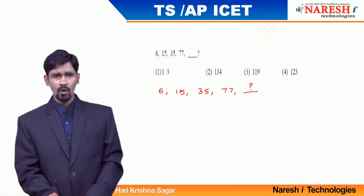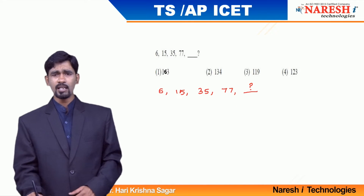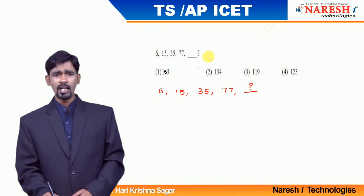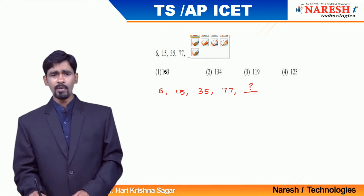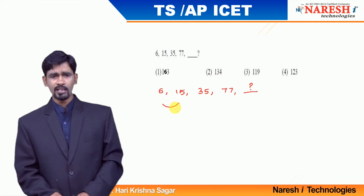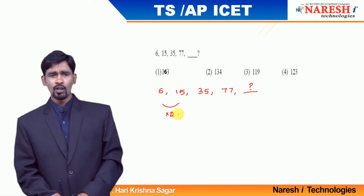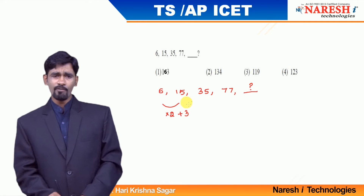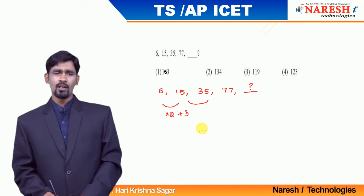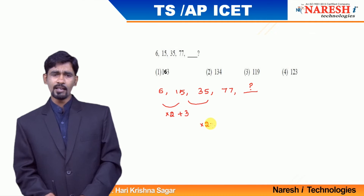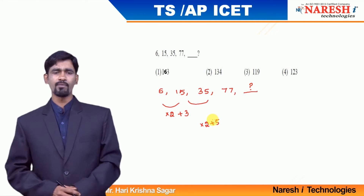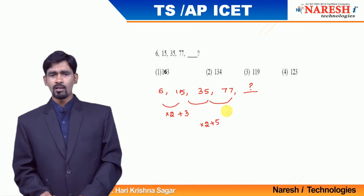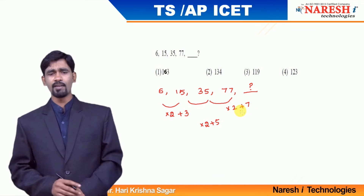Let us look at how we can proceed with the answer. By observing these numbers, I can say that the initial number was 6; 6 becomes 15 means 6 into 2 is 12, and 12 plus 3 is 15. Then 15 becomes 35: 15 into 2 is 30, and 30 plus 5 is 35. Then 35 becomes 77: 35 into 2 is 70, and 70 plus 7 is 77.